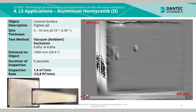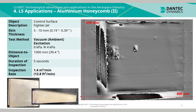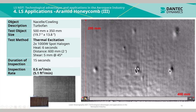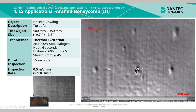Another application shows aluminium honeycomb excited using vacuum ambient excitation, where disbonding between the honeycomb core and skin is clearly visible. An aramid honeycomb sample was also inspected using thermal excitation with two 1000W spot halogen heat lamps applied for six seconds. The entire inspection took 15 seconds, yielding an inspection rate of 0.5m² per minute. Seven discontinuities are visible on the phase map, generated through impact damage simulated by dropping a metallic ball at specific heights.